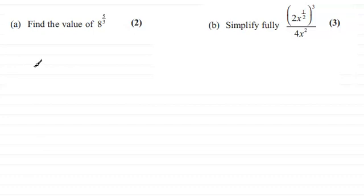So for the first one we've got 8 to the power 5 thirds. Now you should be familiar with this kind of thing. What we do is the 3 here denotes the cube root of the number which in this case is 8, and then after that the 5 means that we take this answer and we raise it to the power 5.